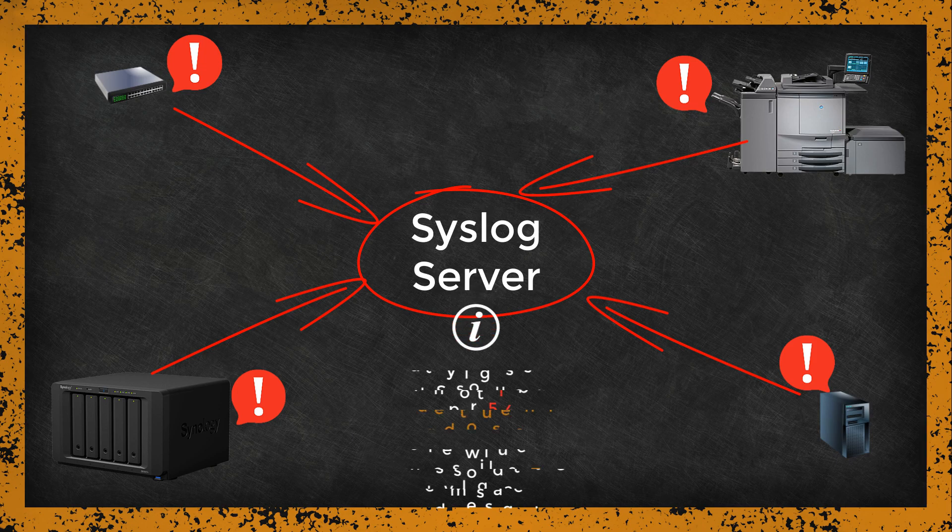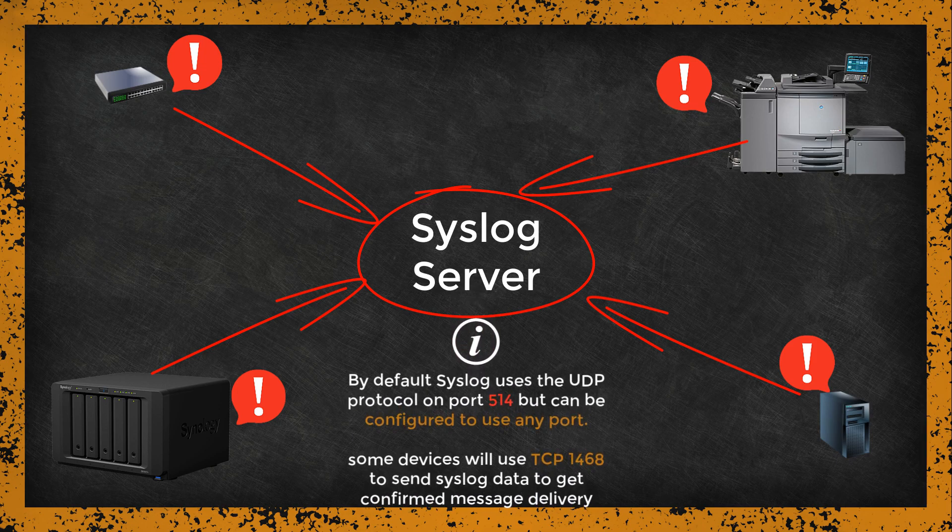Traditionally, Syslog uses the UDP protocol on port 514 but can be configured to use any port. In addition, some devices will use TCP 1468 to send Syslog data to get confirmed message delivery.